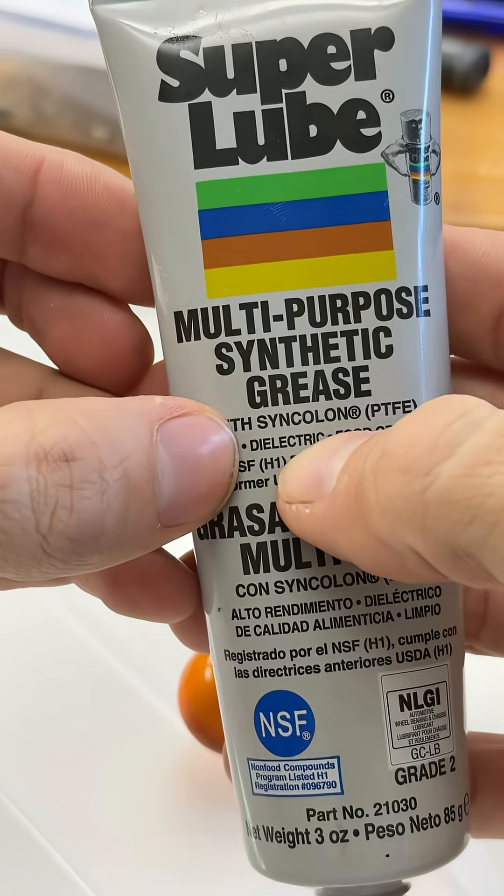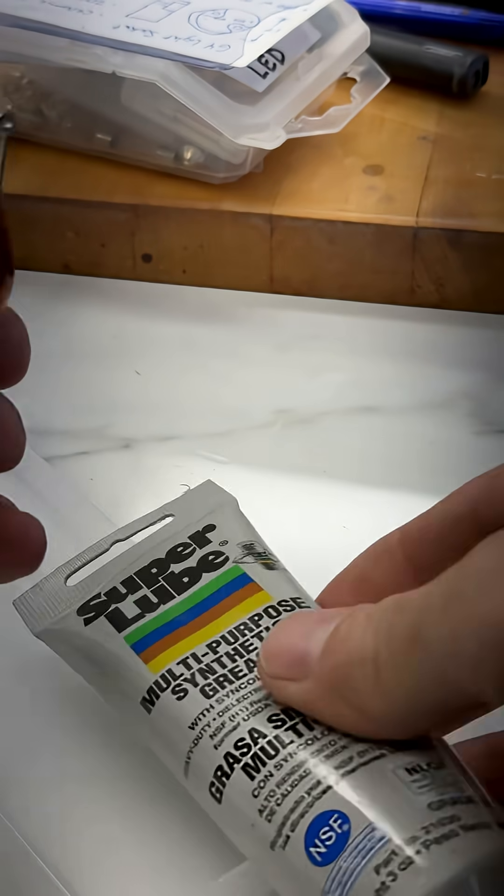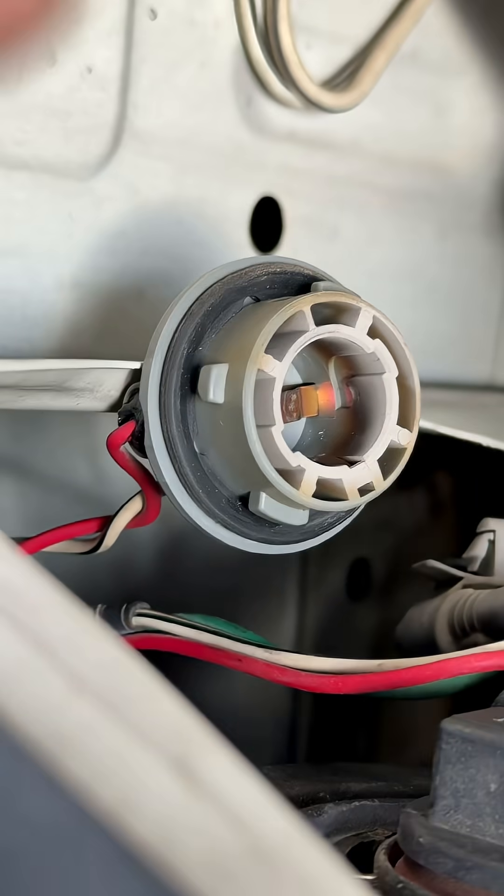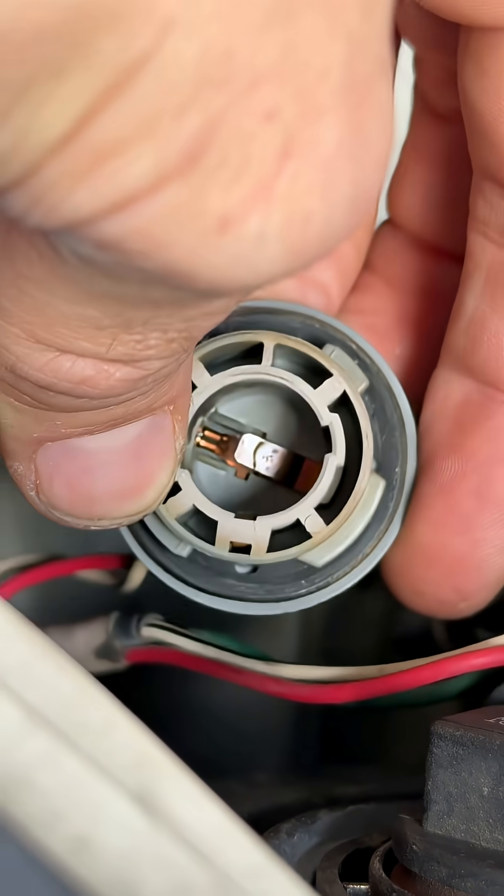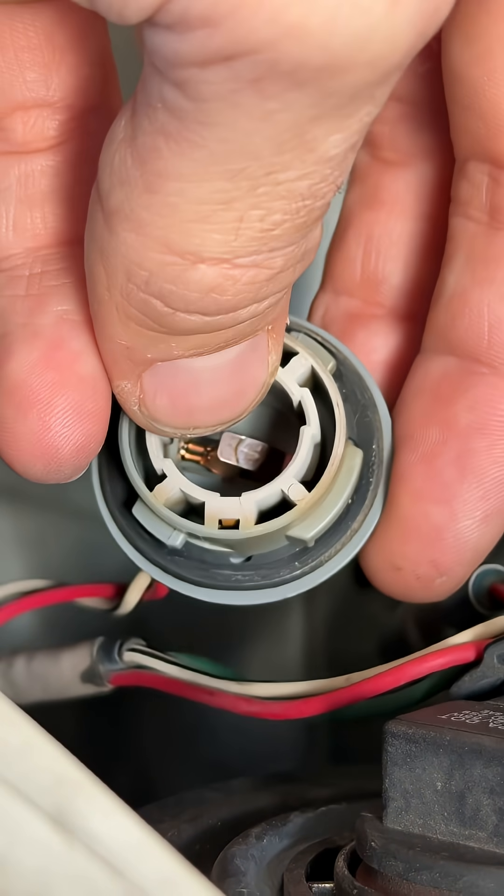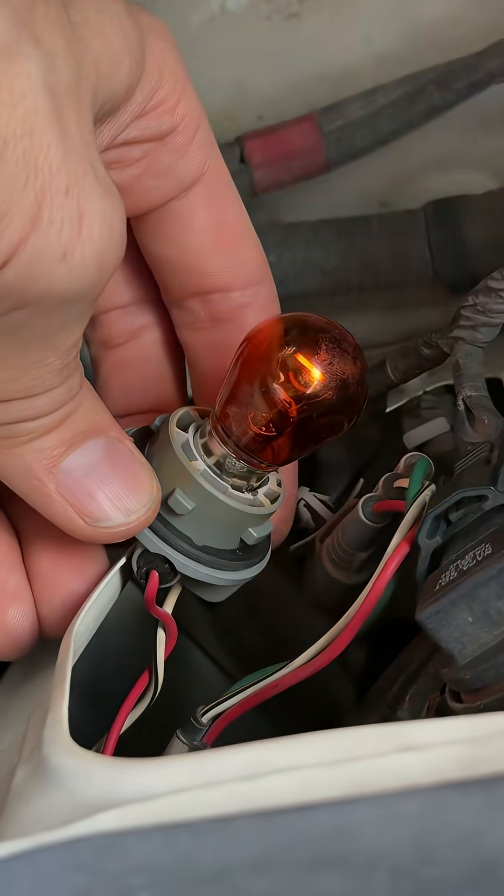Why do we want dielectric grease? That means it prevents electricity from passing through it directly on an electrical contact. Check out that little tab. We have a tiny speck, a tiny point where there will be contact between that and the base of my bulb where all the current flows through. See, I told you it wasn't burned out.